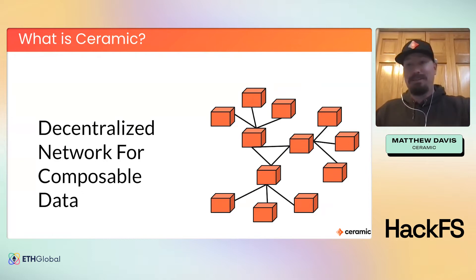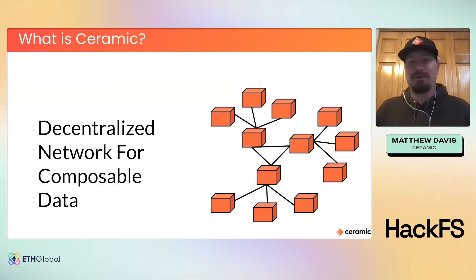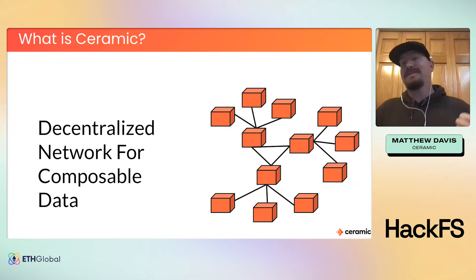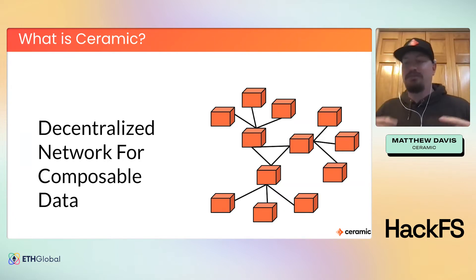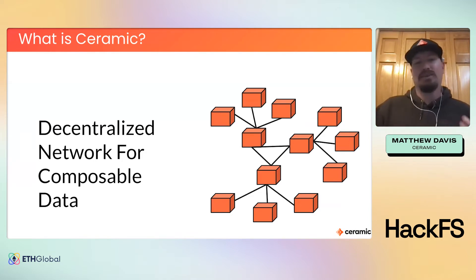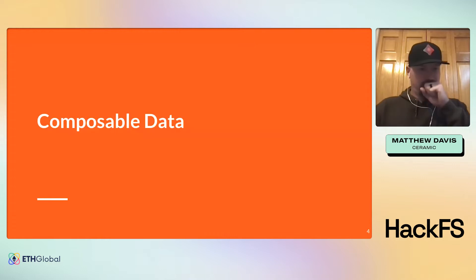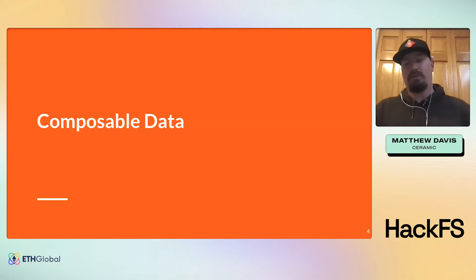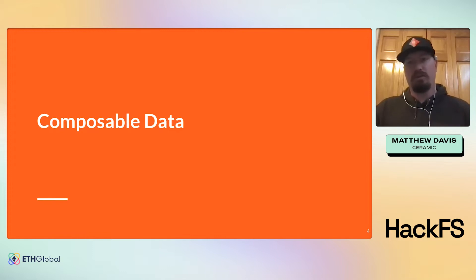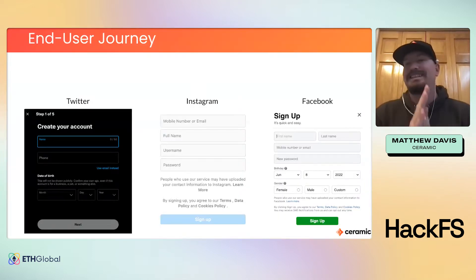So what is Ceramic? It's easy to break this down into one sentence: a decentralized network for composable data. But that leaves a lot of ambiguity, so I like to tear this apart into two sections — the decentralized network and the composable data. It's easier to talk about the data first since everybody understands data a little easier, so we're going to start by talking about composable data.